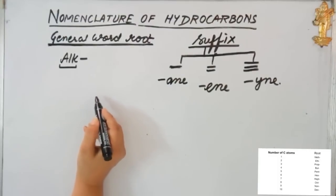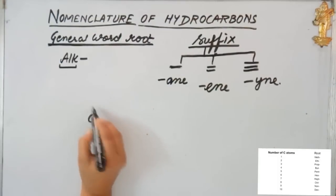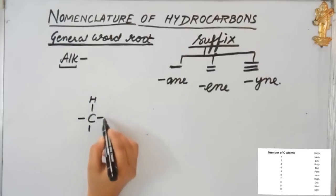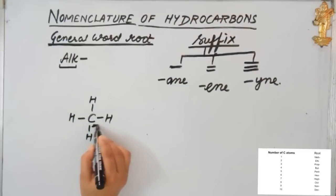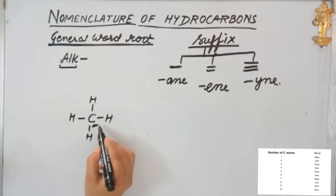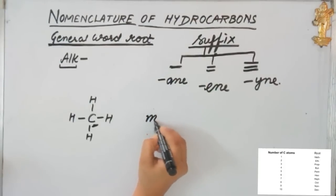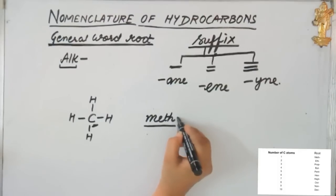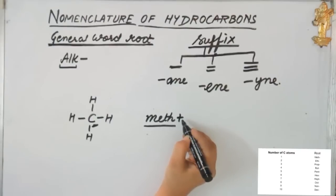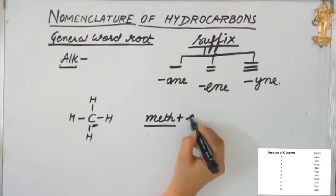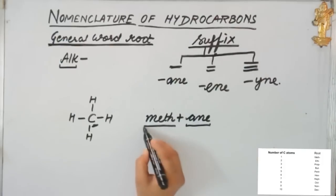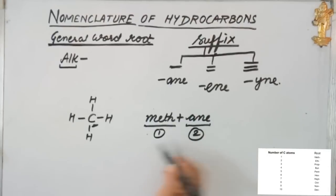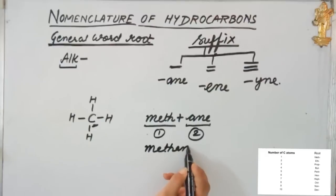Let's start naming compounds with examples. The first example is CH4. There is only one carbon atom, so the word root is 'meth'. There is only a single bond, so the suffix is 'ane'. Combining both parts, the name becomes methane. Easy one!